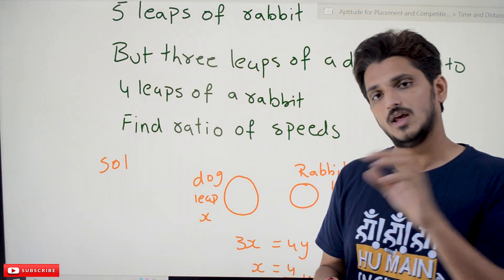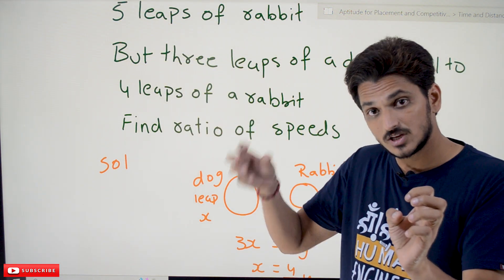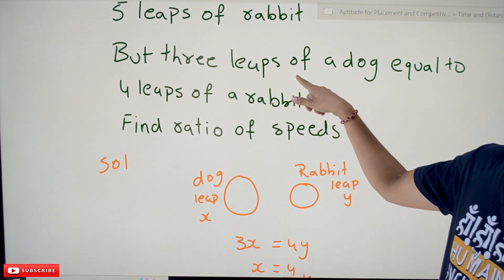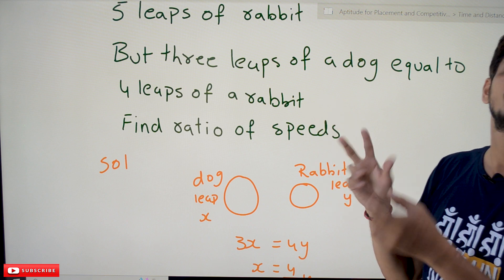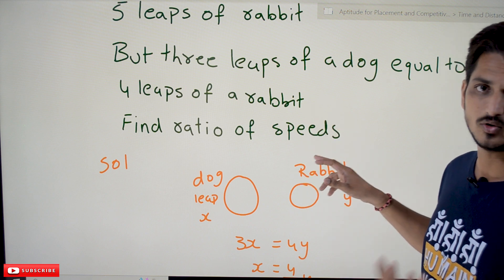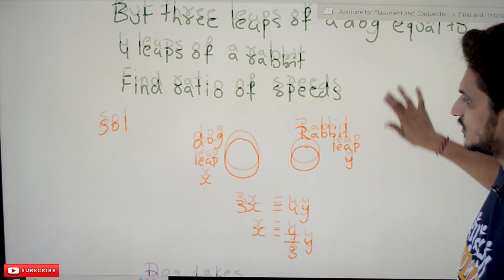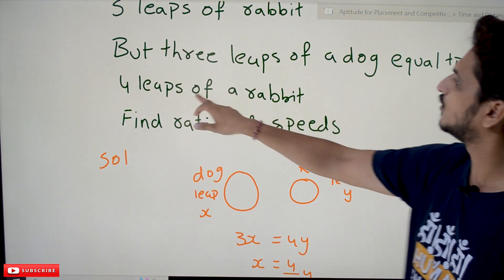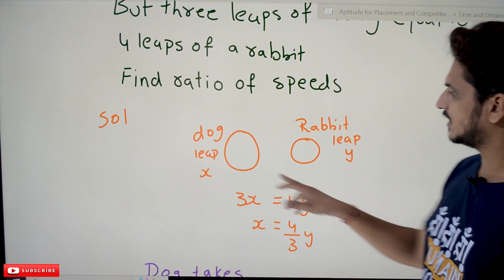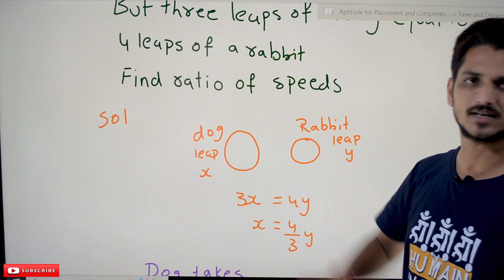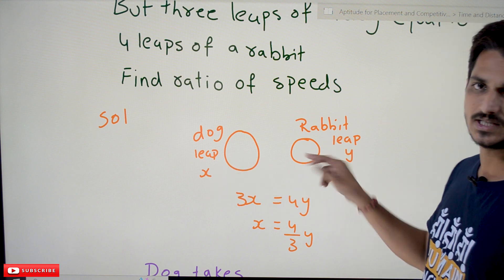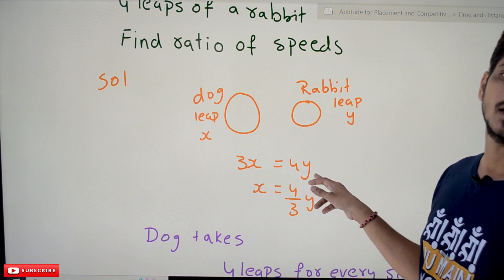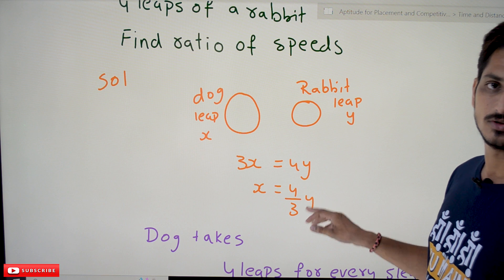We need to find the ratio of their speeds. The formula gives speed as inversely proportional to time when distance is same, but here distance is different. So we approach it differently. Assume one leap of the dog = x, and one leap of the rabbit = y. From the condition 3 leaps of dog = 4 leaps of rabbit: 3x = 4y.